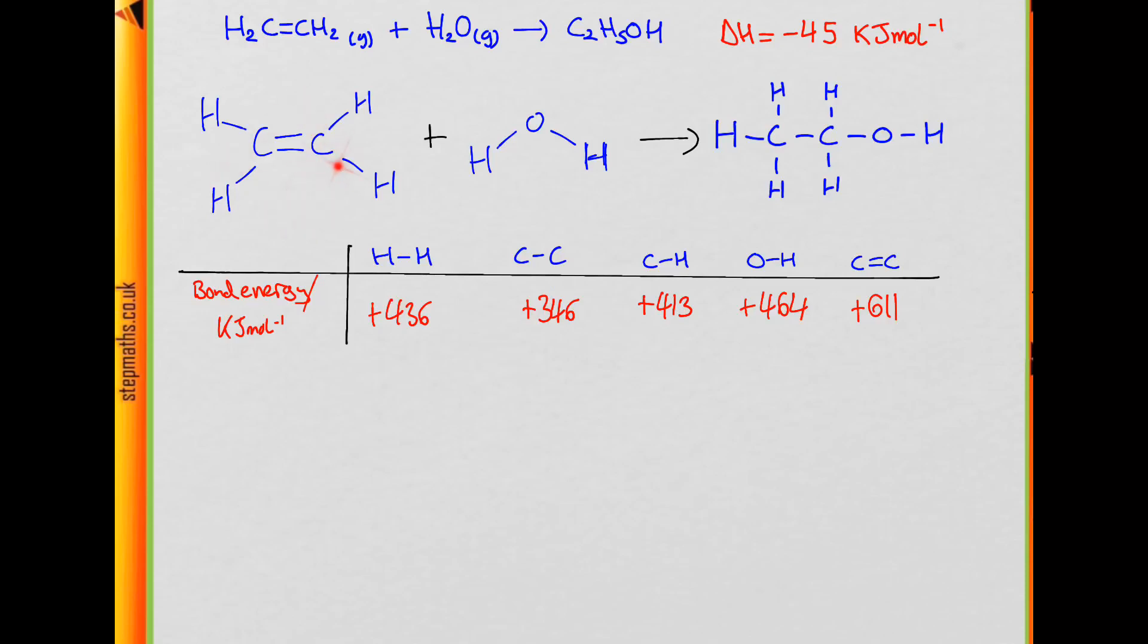So we can see with ethene we have broken the pi bond, and in water we've broken one of the O-H bonds, and in ethanol we've formed the C-H bond and we've formed the C-O bond.